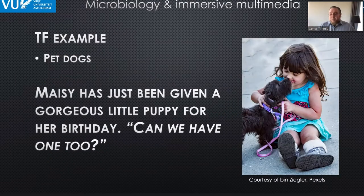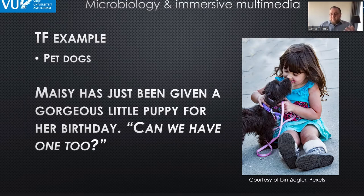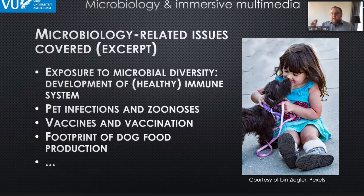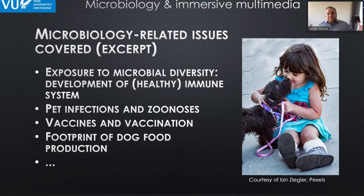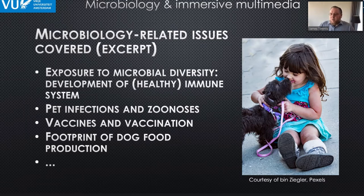The very first topic framework example was pet dogs. It starts with the question: 'Maizey has just been given a gorgeous little puppy for her birthday — can we have one too?' Topics covered include exposure to microbial diversity and healthy immune system development, pet infections and zoonosis, vaccines, vaccination footprint, and dog food production — connecting microbiology to individual daily life and broader challenges like climate change.